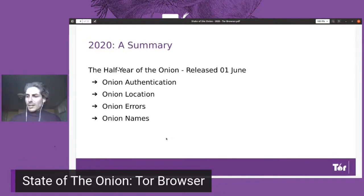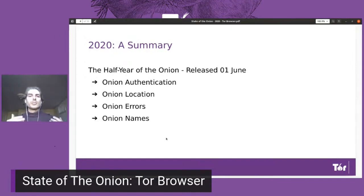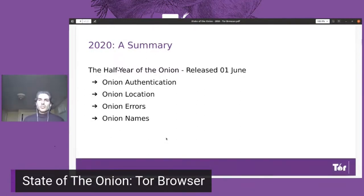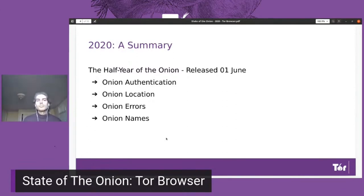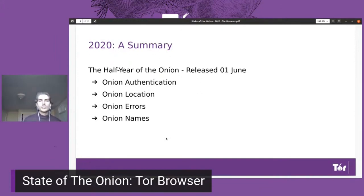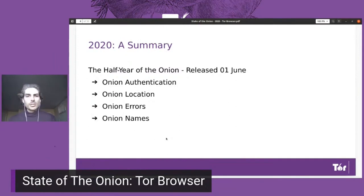This past year in 2020 was divided into two parts. The first part was related to Onion Services and Onion Service usability in Tor Browser. That included adding a user interface for Onion authentication, which I'll show later. We added Onion location, which Gus just referred to, as well as Onion errors and Onion names.